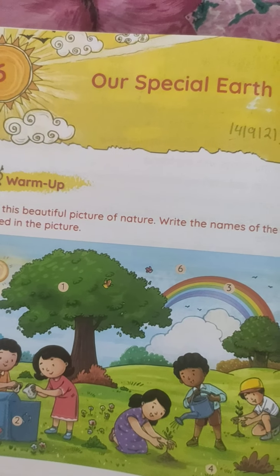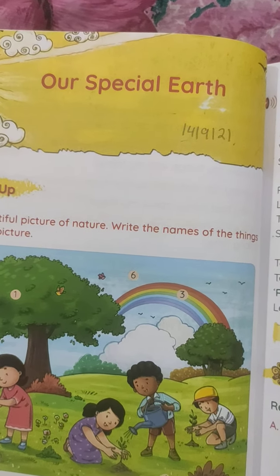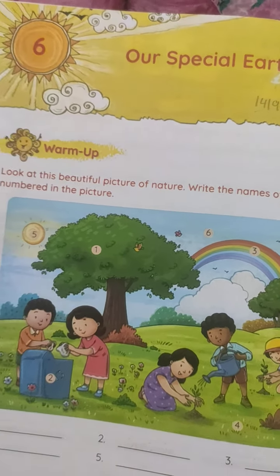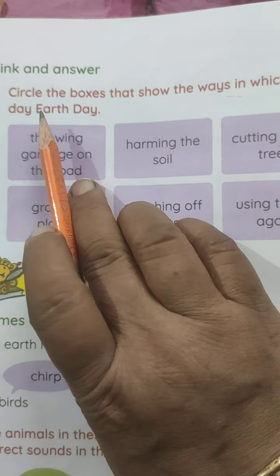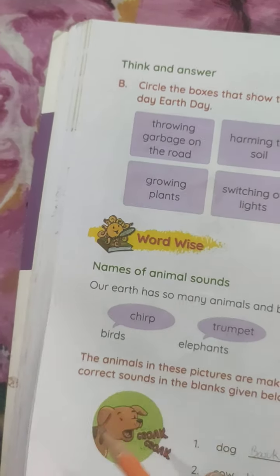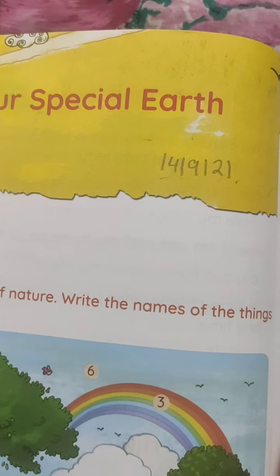Good morning, my dear students. Welcome to the English period. Today we are going to do exercise B from your course book. So children, take out your English course book, open lesson 6 — Our Special Earth — and open page 50.